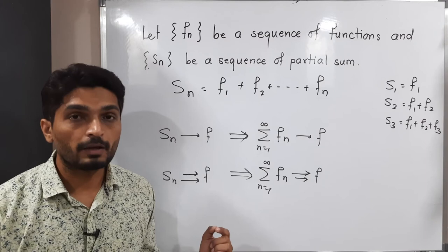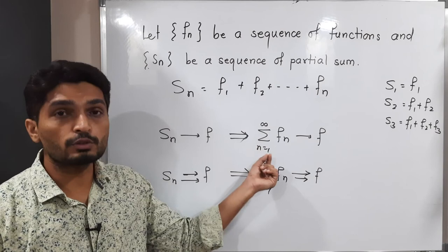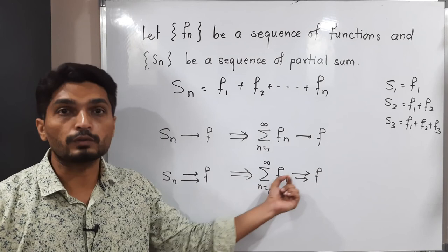This is a very important result: if the sequence of partial sums converges to f, then our series also converges to f. If it converges uniformly to f, then our series also converges uniformly to f. Please make a note of this.